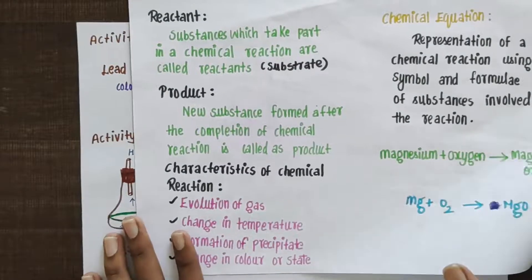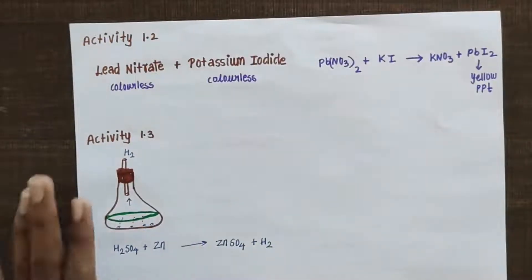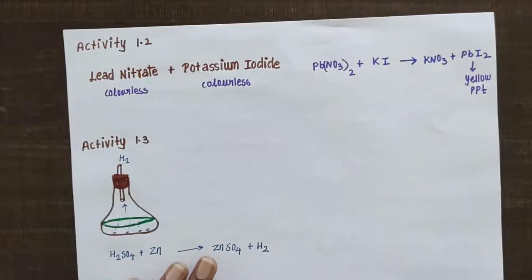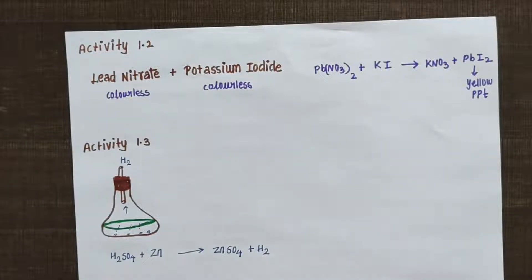So first activity 1.2, then activity 1.3. Activity 1.2 is very simple. You have two solutions. You have two things mixed with a yellow color — you can see a solid one settle. That is activity 1.2.